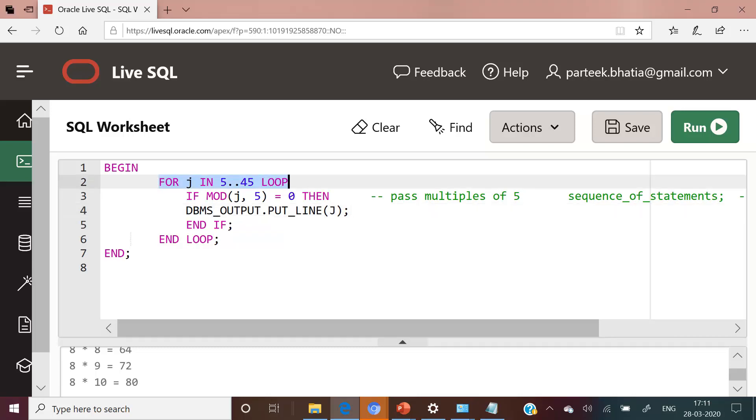Here we have a for loop for j in 5 to 45 loop. In if condition we just printed the value of j to check its step value. No need to declare this counter variable. So there is no declare section in this. Let us execute this code.